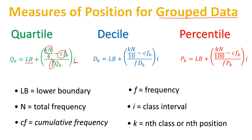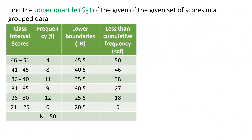For example, find the upper quartile of the given set of scores in grouped data. Before we start dealing with the formula, let me first explain the frequency distribution table. Our lower boundary values come from the lower end of each class interval minus 0.5. So 46 minus 0.5 gives us 45.5, and 41 minus 0.5 gives us 40.5, and so on.